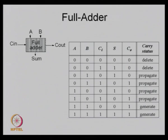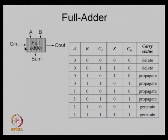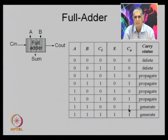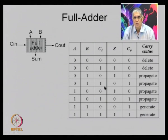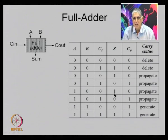Here is the typical truth table for a full adder: inputs A, B, and input carry; outputs are sum and carry out. This is interesting — it is called the carry status. If A and B are 0 and carry is 0, sum is 0 and no carry is needed. Once one of the three bits becomes 1, the sum becomes 1. If two bits are 1, sum goes to 0 but a carry is generated. The states are called kill, generate, and propagate.